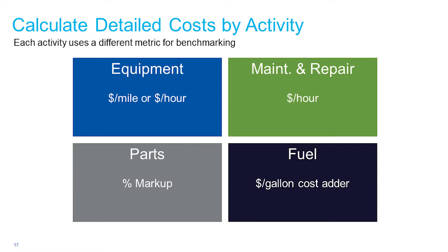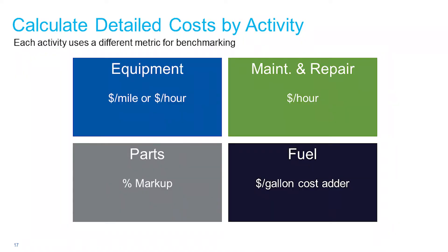One of the ways you want to try to express these costs is through standard measures. For equipment, you're typically looking at cost per mile or cost per hour to own and operate. For maintenance and repair costs, that's typically expressed as labor cost per hour — how much is it costing per hour for your technicians to work on equipment? The same applies for parts and fuel. We're going down this stepwise process, breaking the problem down into smaller and smaller digestible pieces for each of those four major activity categories.